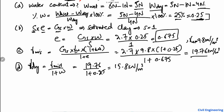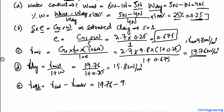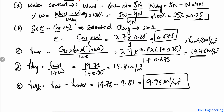The last unknown is the effective unit weight of the soil sample. The effective unit weight equals the saturated unit weight minus the unit weight of water. The saturated unit weight is 19.76 kN/m³ minus the unit weight of water which is 9.81 kN/m³, giving an effective unit weight of 9.95 kN/m³.